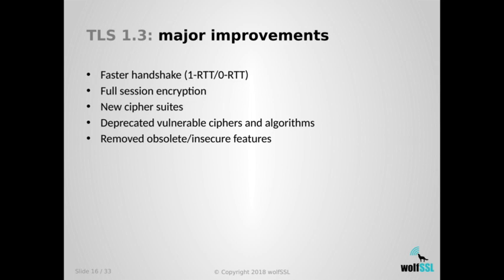The major improvements of TLS 1.3 are: first, a faster handshake. The classic TLS 1.2 handshake is done in two round-trip times, which adds up — combined with the TCP three-way handshake — to four RTTs total. For an HTTPS request, you're at five, and if you're 400ms away on the other side of the world, you're waiting two seconds before data can start exchanging. In TLS 1.3, the full handshake process is now encrypted after the server hello, meaning fewer vulnerabilities during the handshake itself.